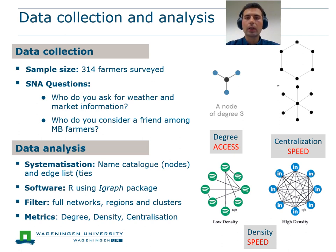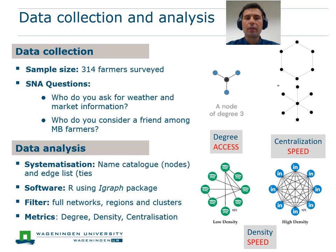In this slide I will give a brief overview of the actual method used. In this study, we collected data from 314 farmers in structured surveys and asked each farmer three social network questions: Who do you ask for weather and market information? Among farmers who grow mung bean in your area, who do you consider to be a friend? We noted down all the names they could recall and also took data on additional characteristics for each person in their network, including how they are related and how often they meet. We then analyzed the data by systematizing it and running the actual social network analysis using the iGraph package in the R statistical computing environment.